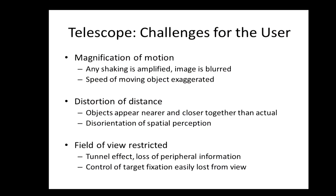The telescope tends to be a less user-friendly tool than magnifiers. Some students adjust quickly and training time is minimal, but telescopes can be a more challenging tool. The first challenge is magnification of motion — any shaking is amplified and the image is blurred, and the speed of a moving object is exaggerated. The second challenge is distortion of distance: objects appear closer together and closer to the viewer than they actually are, causing disorientation of spatial perception. Students need time and practice to recognize how these objects actually appear in reality.